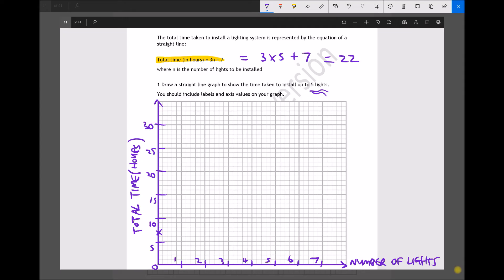Now we could go through this process for every number of lights. So 1 light we would have 3 times 1 is 3 plus 7 is 10, and we could repeat that process all the way along. Now with it being a straight line, in order to plot a straight line we only actually need 2 points. So what I'm going to do is use my value here. It takes 22 hours to install 5 lights. I'm going to go to 5 lights on my x-axis and I'm going to go to 22 which is here. And I now know that I have sufficient points to plot my line.